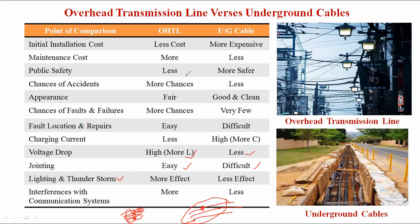Lightning and thunderstorm: overhead transmission lines are affected; underground cables are free from lightning and thunderstorm. Interference with communication systems such as radio and television signals: overhead transmission lines are more affected, but in underground cables the effect is less. This completes the comparison between overhead transmission lines and underground cables.